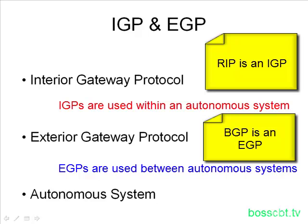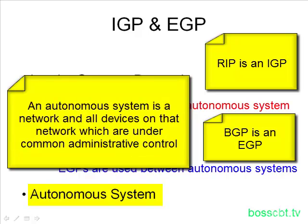So an autonomous system — we've mentioned that twice now. What exactly is it? An autonomous system is any independent network which is under the control of a single organization. All the routers, switches, computers, printers, and everything on a private network under common administrative control. Think of a company like Company A — they have all their equipment and their own private network. That is considered an autonomous system.